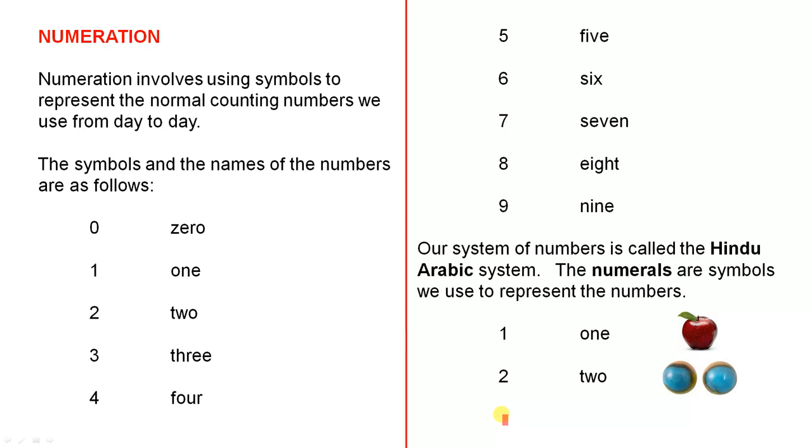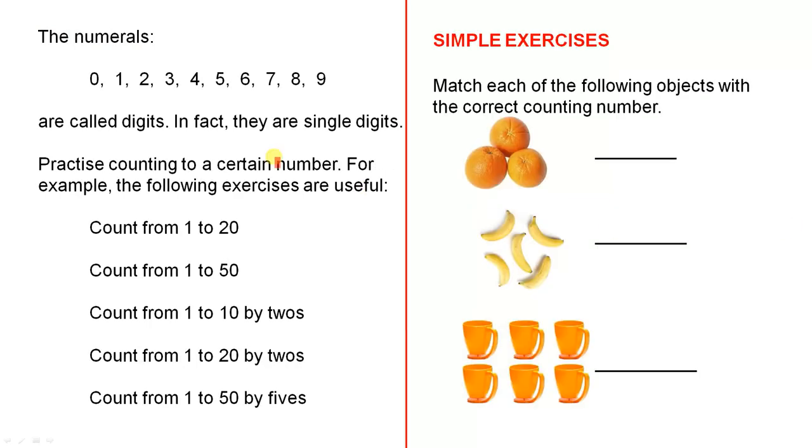We can continue on. If we were to write the symbol 3, that could stand for 3 oranges, for example. The numerals 0, 1, 2, 3, 4, 5, 6, 7, 8 and 9 are called digits. That's what we call them. Each of those marks on the page, or those symbols, they are called digits. And in fact, they're single digits because there's only one of them. You pick any one of them here, and that's why we call them single digits.